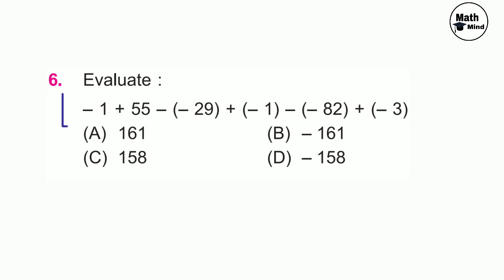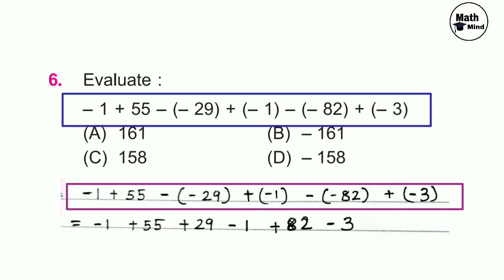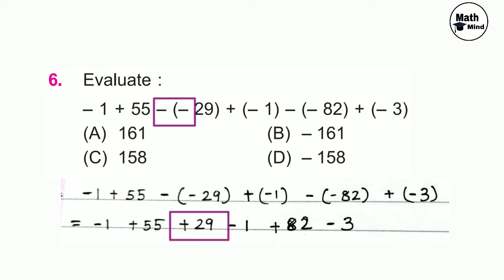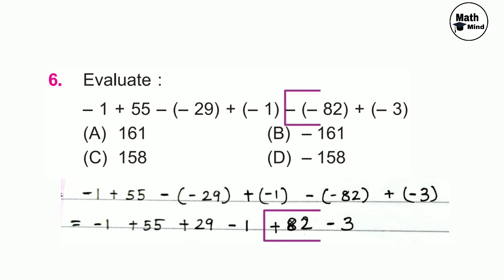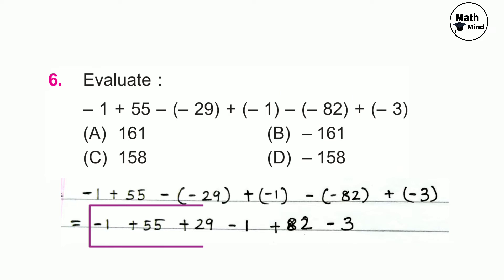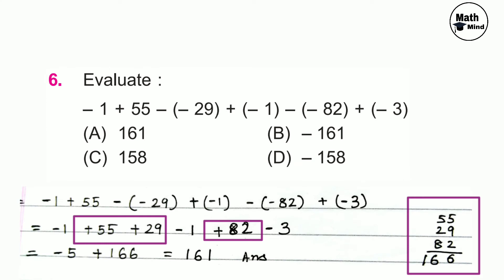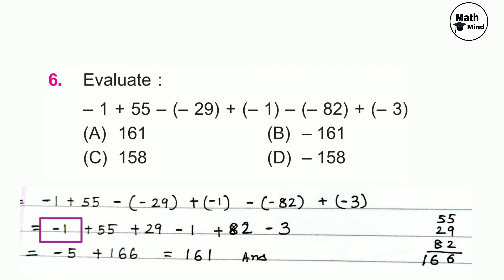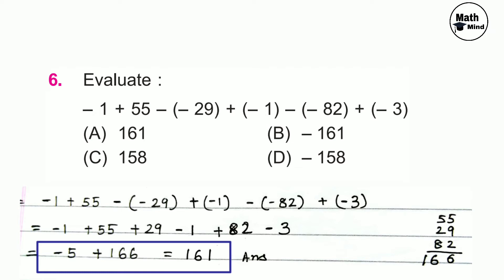Question number 6: evaluate the given expression. Negative of negative equals positive, so one term becomes plus 29 and another becomes plus 82. The new expression is −1 plus 55 plus 29 minus 1 plus 82 minus 3. Adding all positive numbers: 55 plus 29 plus 82 equals 166. Adding all negative numbers: −1 minus 1 minus 3 equals −5. Then −5 plus 166 equals 161. Option A is correct.